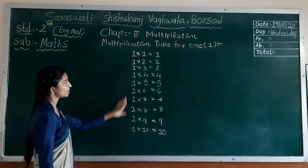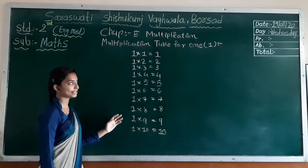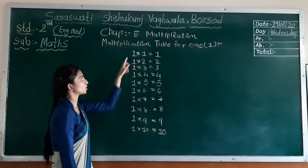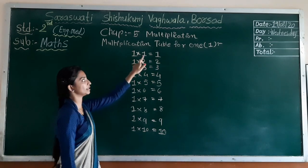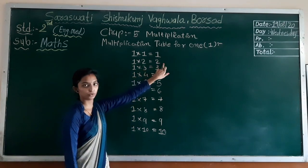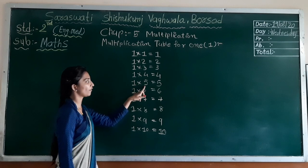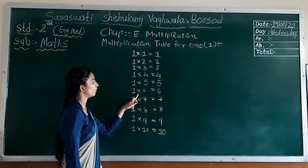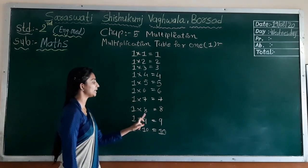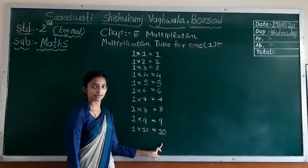See here — this is the multiplication table for one. How to read it: one one the one, one two the two, one three the three, one four the four, one five the five, one six the six, one seven the seven, one eight the eight, one nine the nine, one ten the ten.